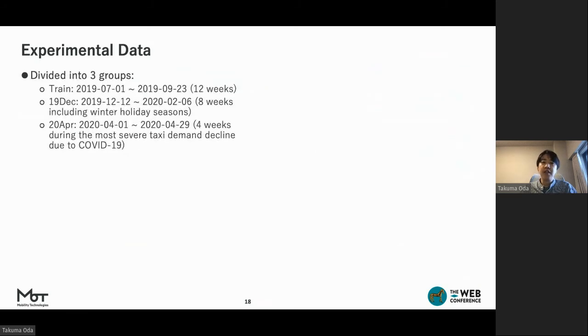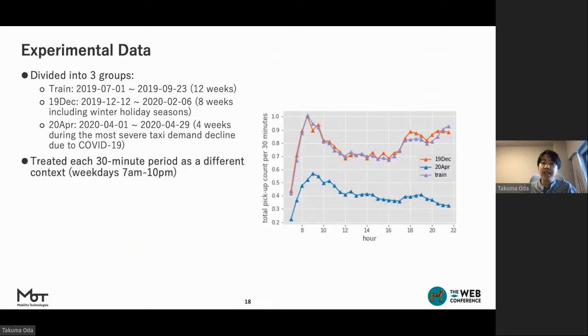For evaluation, the dataset was divided into the following three periods. Train data is used for training baselines or our proposed model. 19 December and 20 April are used for evaluation. In each dataset, we treated each 30-minute period from 7 a.m. to 10 p.m. as different contexts. And in each context, we aggregated several characteristics, such as the number of rides on a road-by-road basis. The number of half-hour rides in each dataset is shown in this figure. For April dataset, the environment is significantly different due to the sharp drop in demand due to COVID-19.